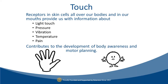Now let's dive into our sensory systems. We'll start with touch. We receive touch information from the receptors in our skin and our mouth. Touch receptors help us identify light touch, deep pressure, vibration, temperature, and pain. The tactile system helps us understand where our body is in space — body awareness — and helps us create and carry out a plan to do things, which we call motor planning.